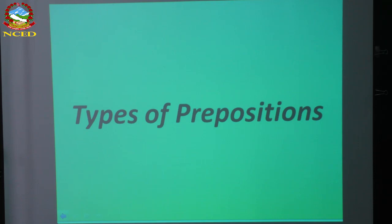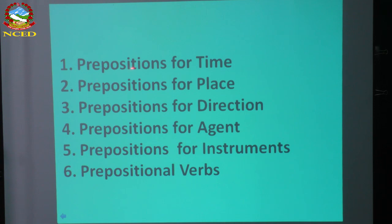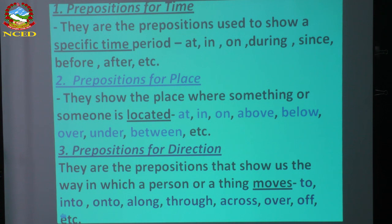Now what are the types? They can be categorized into six broad categories: prepositions of time, prepositions of place, direction, agent, instrument, and prepositional verb. So the first one: prepositions for time — they are used to show specific time period. At, in, on, during, since, before — they show time.